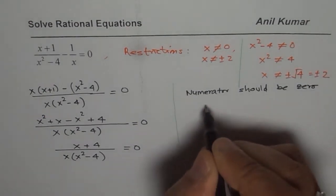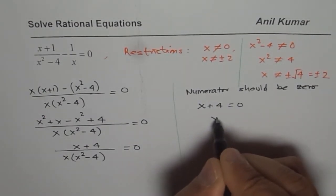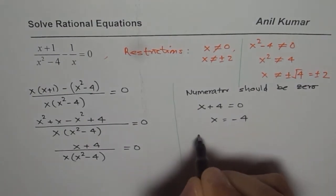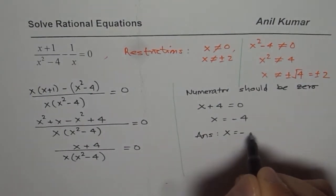That means x plus 4 is equals to 0, x is equals to minus 4. So our solution is that x is equals to minus 4.